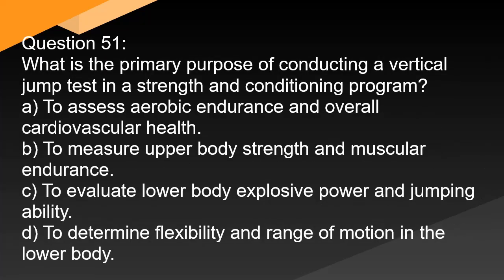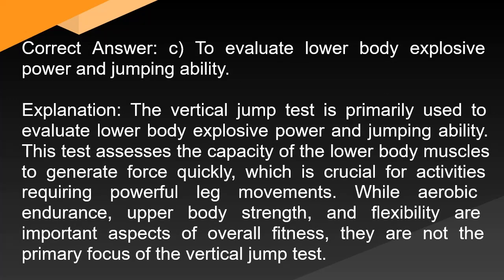Question 51: What is the primary purpose of conducting a vertical jump test in a strength and conditioning program? A. To assess aerobic endurance and overall cardiovascular health. B. To measure upper body strength and muscular endurance. C. To evaluate lower body explosive power and jumping ability. D. To determine flexibility and range of motion in the lower body. Correct answer: C. The vertical jump test is primarily used to evaluate lower body explosive power and jumping ability. This test assesses the capacity of the lower body muscles to generate force quickly, which is crucial for activities requiring powerful leg movements. Aerobic endurance, upper body strength, and flexibility are not the primary focus of the vertical jump test.